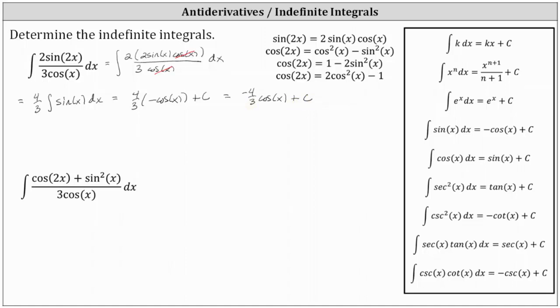We often label the antiderivative with big F of x, and therefore we can state that F(x), the antiderivative, is equal to negative four thirds times cosine x plus c.